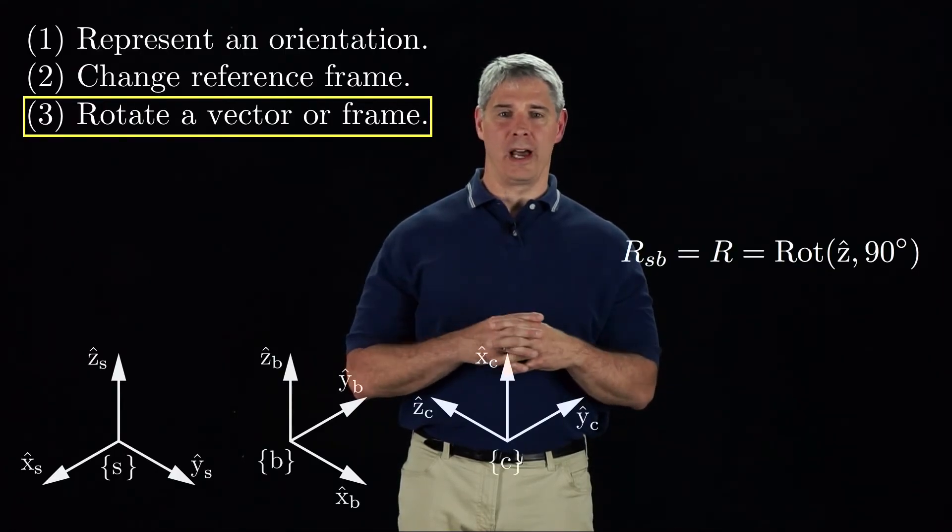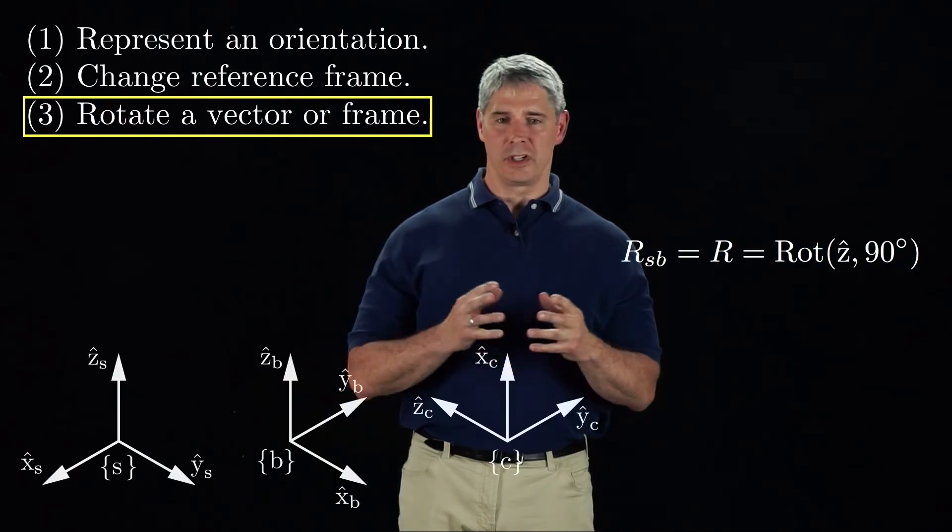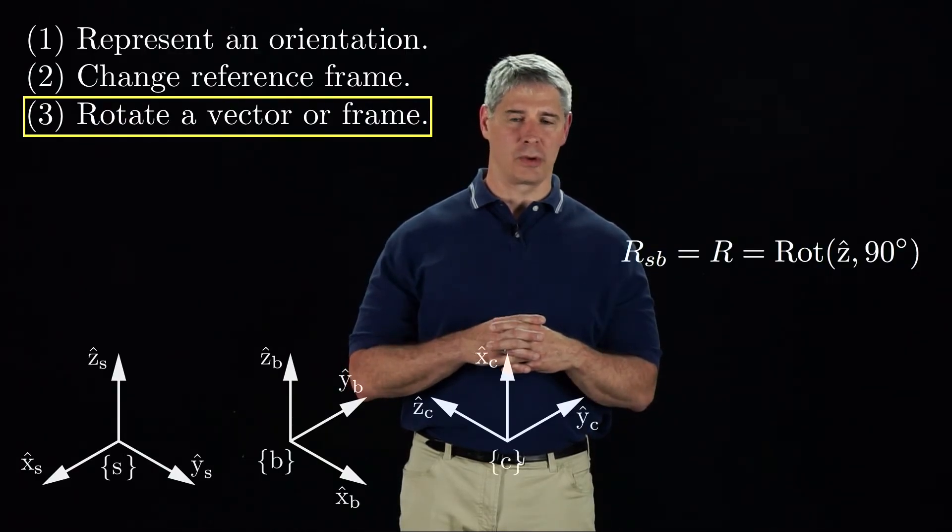If we pre-multiply a vector PB by this rotation operator, we just get a change of reference frame to S coordinates, as we saw before.